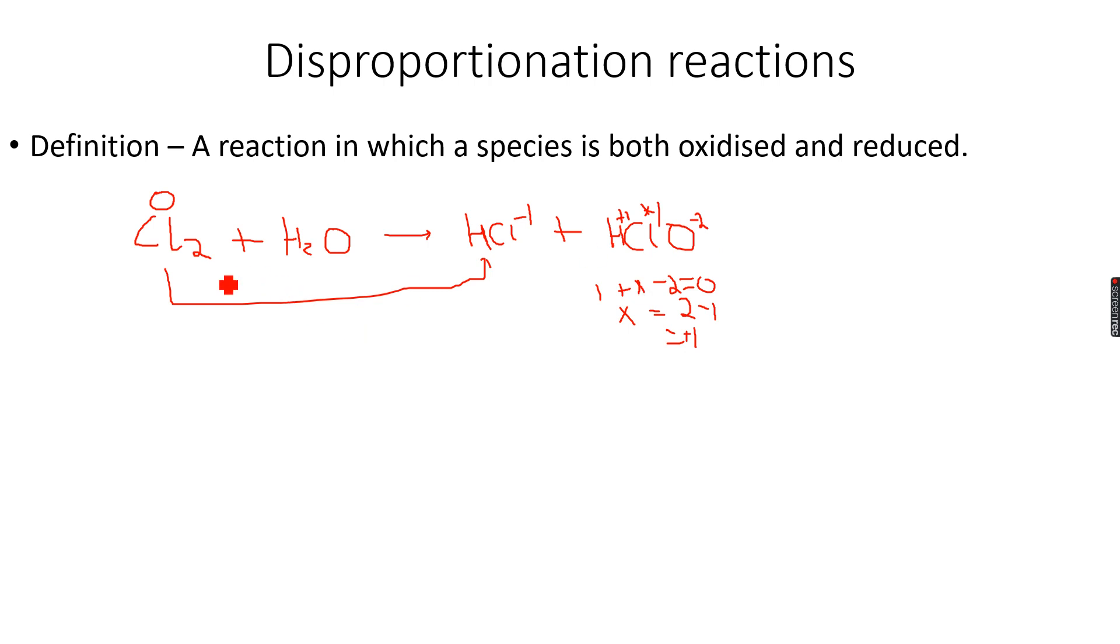Now you can see from here to here, chlorine has oxidized. So from Cl2 to HCl, it goes from 0 to minus 1. From Cl2 to HClO, it goes from 0 to plus 1. And you can see that from Cl2 to HCl, it has reduced. From Cl2 to HClO, chlorine has oxidized.